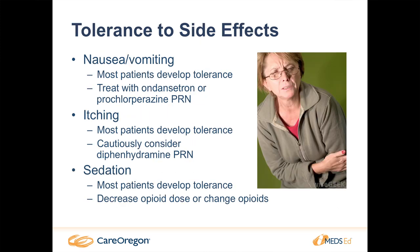Other side effects that patients will develop tolerance to over time are GI side effects like nausea and vomiting, itching, and sedation. For the itching, you can cautiously consider Benadryl as needed — I say cautiously because Benadryl also causes a lot of sedation. If a patient is newly on opioids or has had a dose increase and is experiencing increased itching, giving them something even more sedating might not be ideal. It might be better to just wait for it to fade.